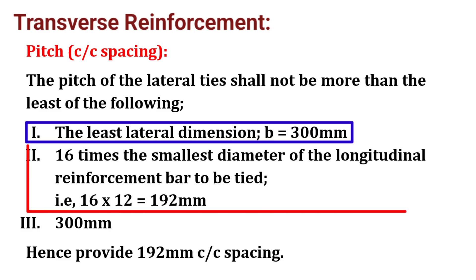The second condition is 16 times the smallest diameter of the longitudinal reinforcement bar to be tied, that is 16 x 12 which will be 192 mm. The third condition is 300 mm.